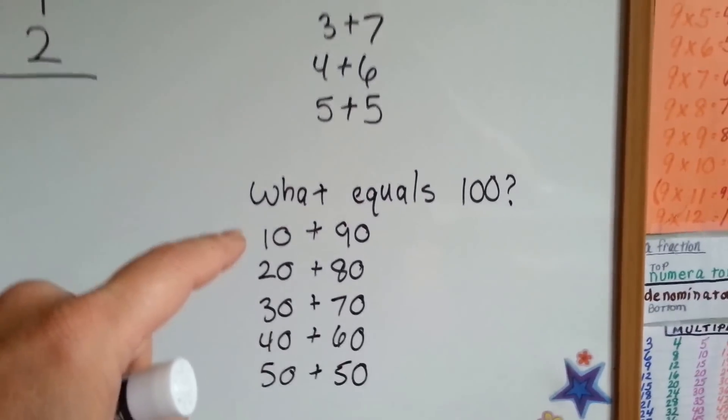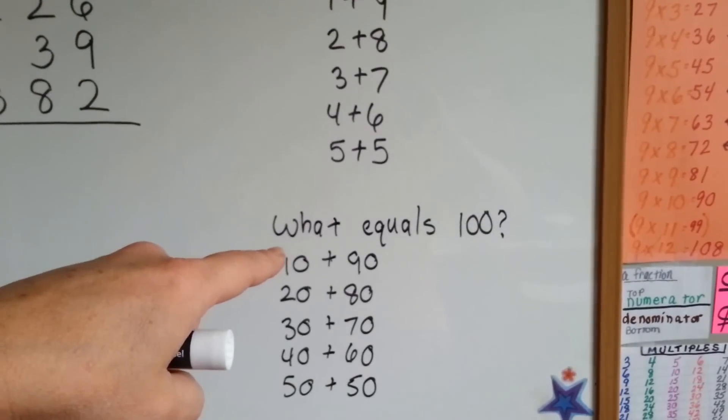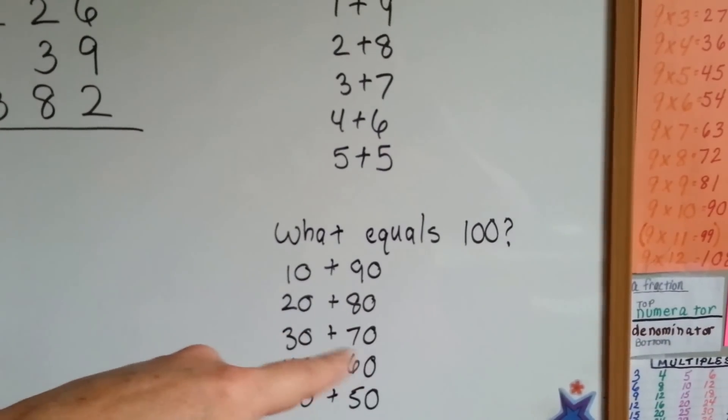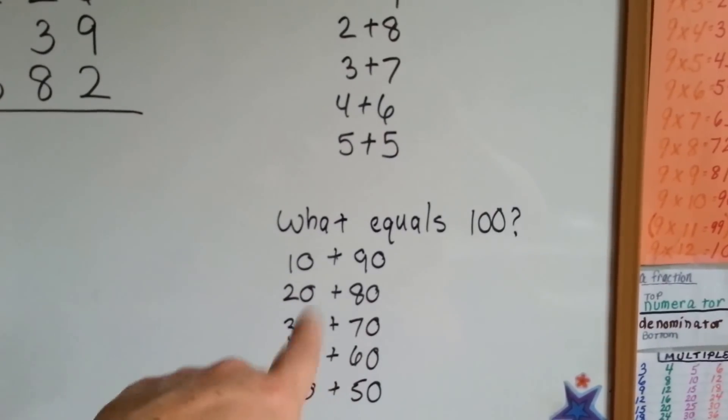What equals 100? Well, the same as these with a zero after them so that they're in the tens place. 10 plus 90, 20 plus 80, 30 plus 70, 40 plus 60, 50 plus 50. See, when you're adding these, you know that they're 100.